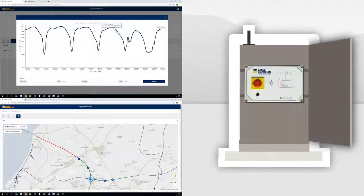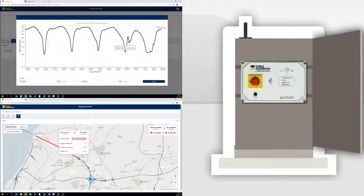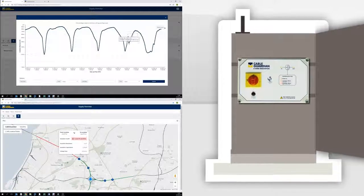Each Cable Guardian unit measures insulation resistance, insulation capacitance, and other electrical parameters of the live cables and system components.